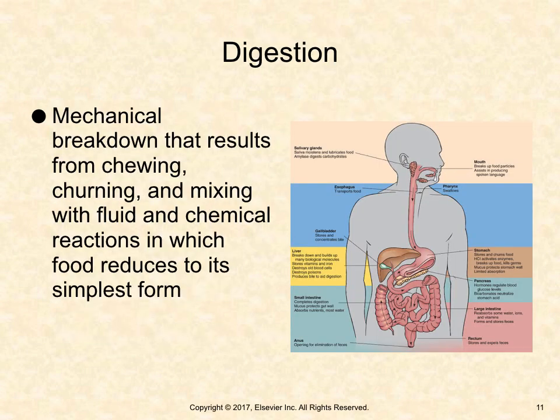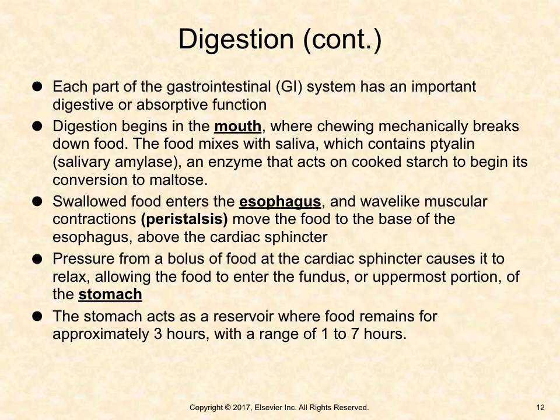Digestion is the mechanical breakdown that results from chewing, churning, and mixing with fluid, and chemical reactions in which food is reduced to its simplest form. Each part of the gastrointestinal, or GI, system has an important digestive or absorptive function. Digestion begins in the mouth, where chewing mechanically breaks down food. Food mixes with saliva, which contains salivary amylase, an enzyme that acts on cooked starch to begin its conversion to maltose.